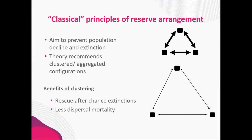To decide on the best place to add habitat, we could look at the classical principles of reserve arrangement. These aim to prevent population decline and extinction. This theory recommends that whatever habitat you have should be clustered. In this diagram, the top configuration would be better than the bottom, because if a population in one of the habitat patches had a local extinction, it would be more likely to be recolonised. The clustered network also has less dispersal mortality when species try to cross non-habitat areas.